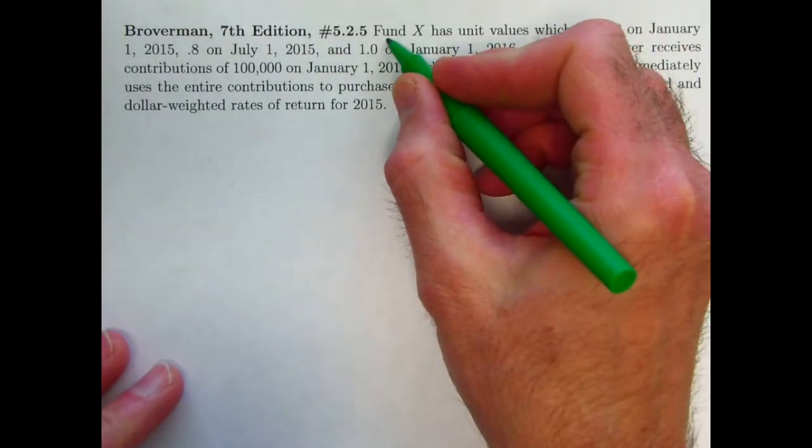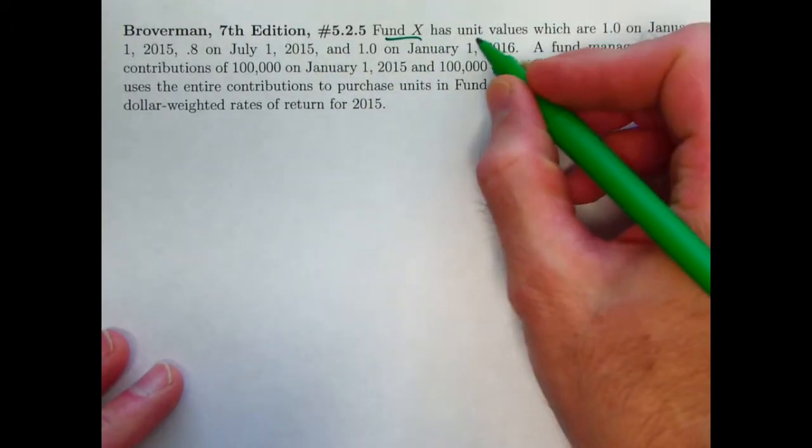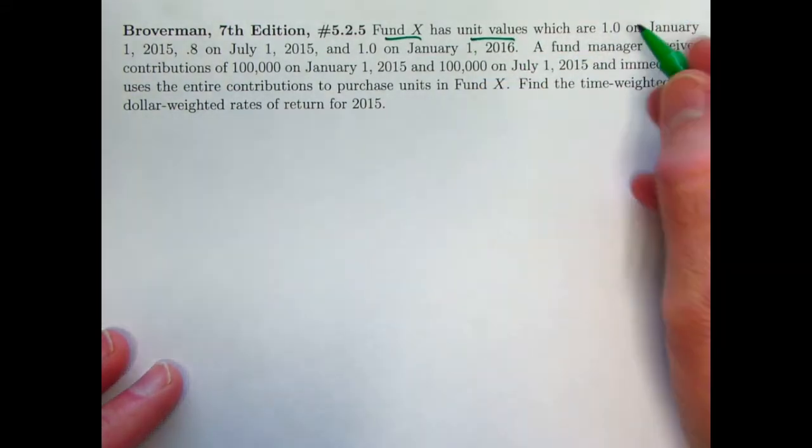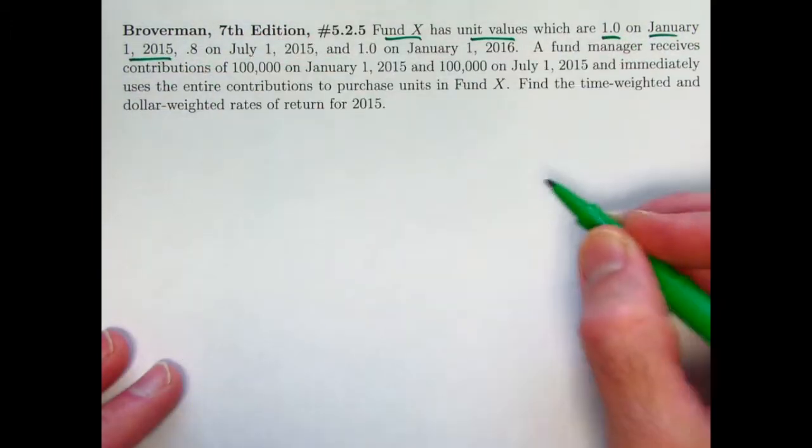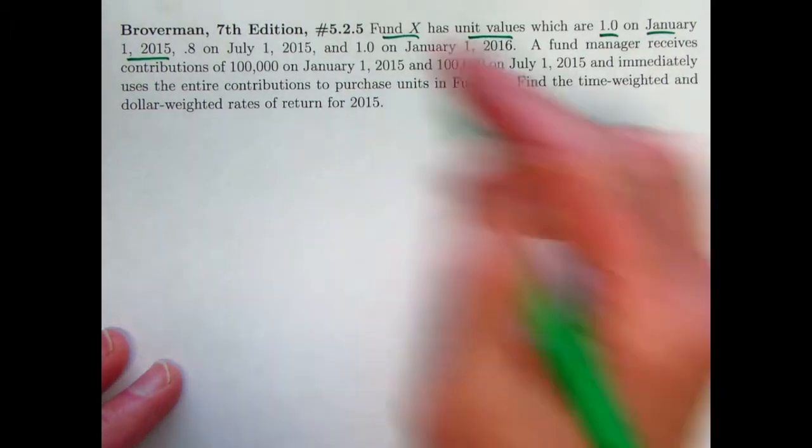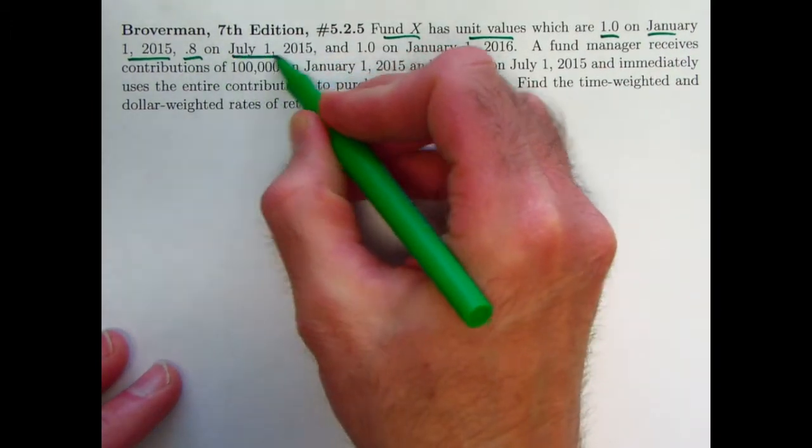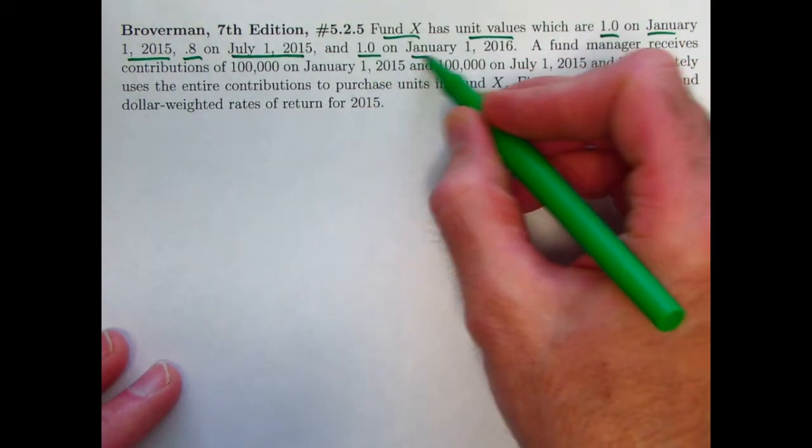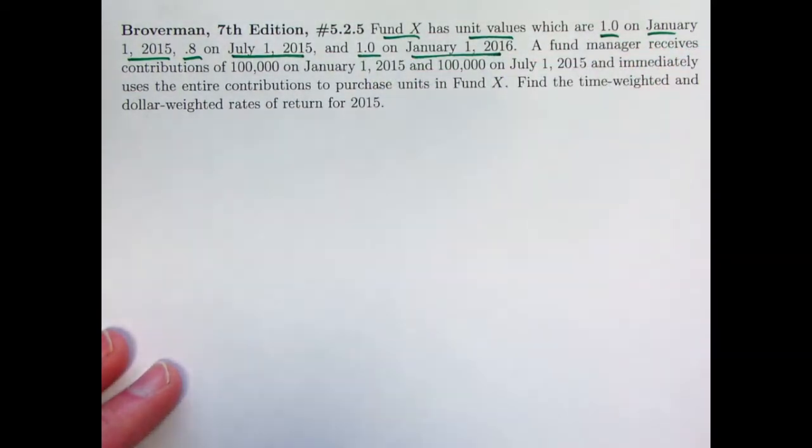So we've got this fund called Fund X that has unit values of 1.0 on January 1st, 2015 at the beginning of the year. We're going to be thinking about one full year here.